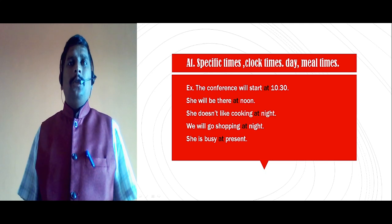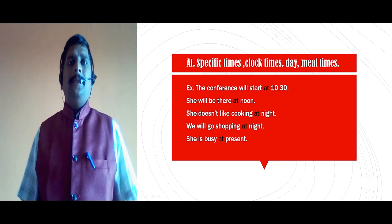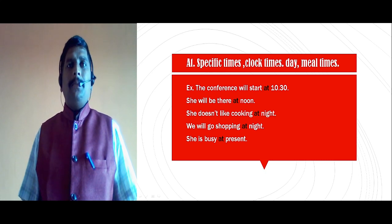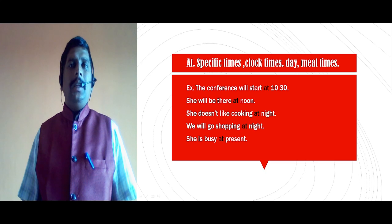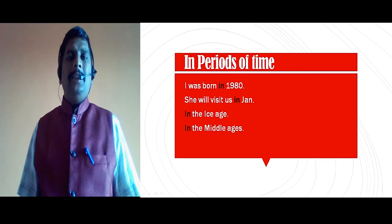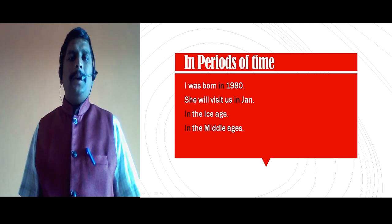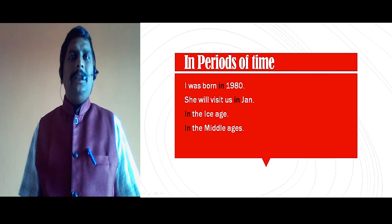'At' is used to show specific times on the clock or points of time in the day. 'In' is used with periods of time. 'On' is used with dates and named days of the week. For example: the conference will start at 10:30. 'At' is also used for day and meal times: she doesn't like cooking at night, we will go shopping at night. In the morning, in the afternoon, in the evening, but at night. She is busy at present. 'In' is used with longer periods of time: I was born in 1980, she will visit us in January.